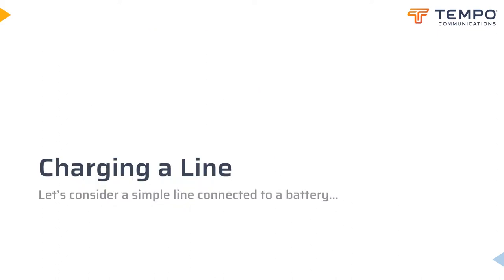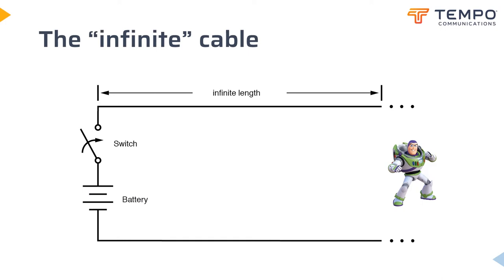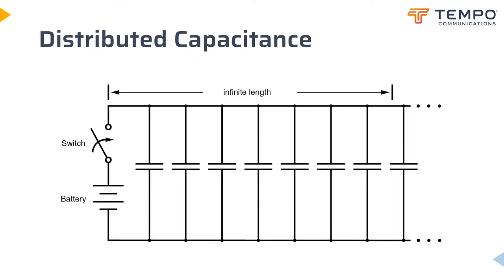Consider the thought experiment: what happens when you apply an electric field to a cable? Consider the seemingly simple case where we have a battery, a switch, and a pair of conductors that disappear into the infinite distance. As there is no complete circuit — it is open at the far end — surely no current will flow when the switch is closed. However, any pair of conductors separated by an insulating medium creates capacitance between them. Even if the transmission line were manufactured from superconductors with zero series resistance, there is no way to avoid creating capacitance along the wires' lengths. Any and every pair of conductors separated by an insulating medium creates capacitance between those conductors.